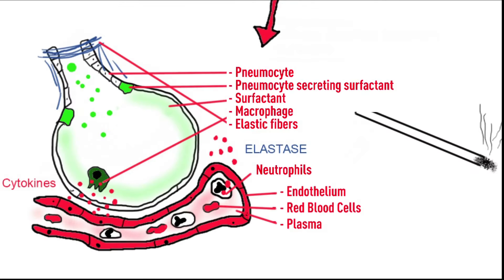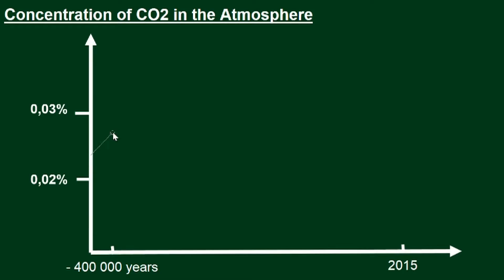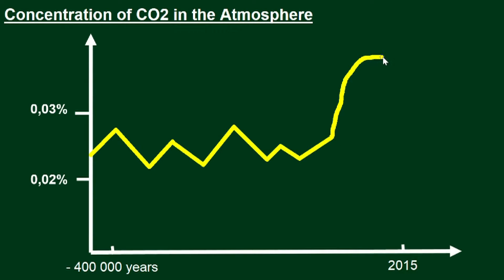You then watched the video about emphysema, explaining how small polluting particles act on the pulmonary alveoli leading to destruction of elastic fibers. Finally, you saw in the video dedicated to CO2 the importance of this gas on the greenhouse effect and global warming, and the fact that the concentration of atmospheric CO2 has risen sharply since the industrial era.